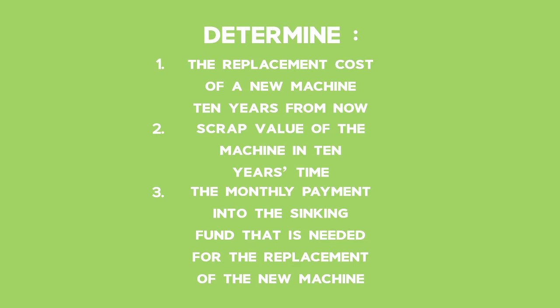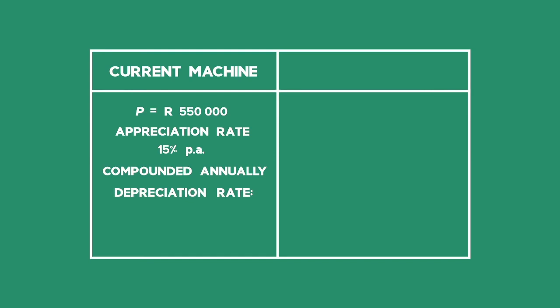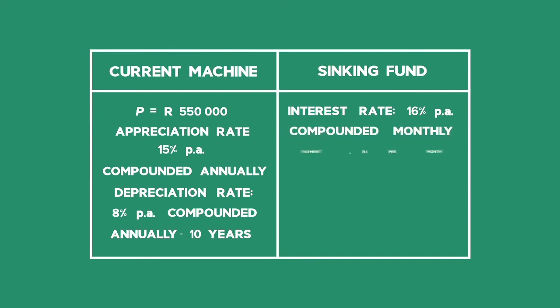We need to separate the information that is given so that we do not mix up interest rates and periods. We can draw a table to help us keep track of interest rates and compounding periods. For the current machine, its value is R550,000. It appreciates at a rate of 15% per annum compounded annually and depreciates at a rate of 8% per annum compounded annually over 10 years. The sinking fund earns interest of 16% per annum compounded monthly, with monthly repayments made over 10 years.